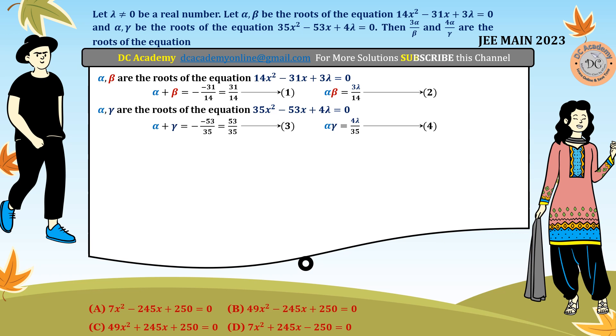If we subtract equations 1 and 3, we get β - γ = 31/14 - 53/35. Doing basic arithmetic, we get 7/10. If we divide equations 2 and 4, we get β/γ = (3λ/14)/(4λ/35) = 15/8. These are equations 5 and 6.